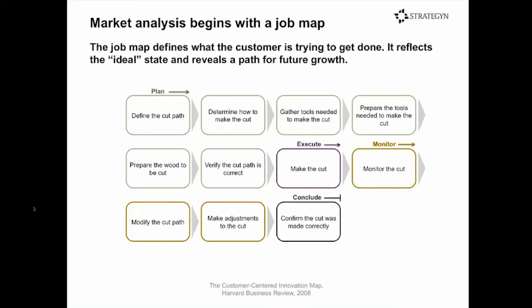The circular saw market sounds like a simple commodity product, yet there are a good number of steps people must go through to make a cut. First, they have to define the cut path — how deep, how straight. They determine how to make the cut, which tools to use, gather those tools, prepare them, prepare the wood, and set the cut path. Then they make the cut, monitor it, make adjustments, and conclude by checking whether the cut turned out as desired.